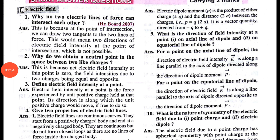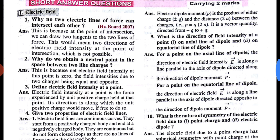Now let's move on to the next question: why do we obtain a neutral point in the space between two like charges? Whether positive-positive or negative-negative, there is always a point in the space between two like charges where the electric field is zero. Why is it zero? Because for two like charges, the electric field is equal and opposite at that point, and equal and opposite fields cancel to give zero.